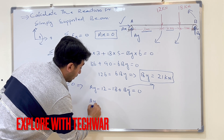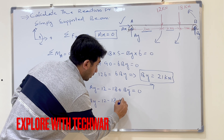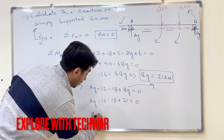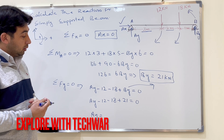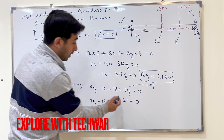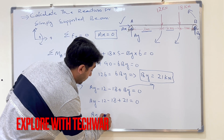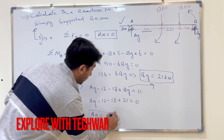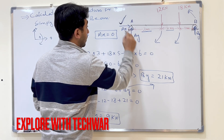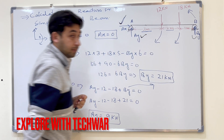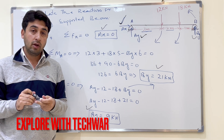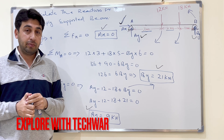Substituting BY equals 21: AY minus 12 minus 18 plus 21 equals zero, giving AY equals 30 minus 21 equals 9 kilonewtons. The positive result confirms AY acts upward. So our three unknowns are: AX equals 0, BY equals 21 kN, and AY equals 9 kN. That's how we find reactions on a simply supported beam.